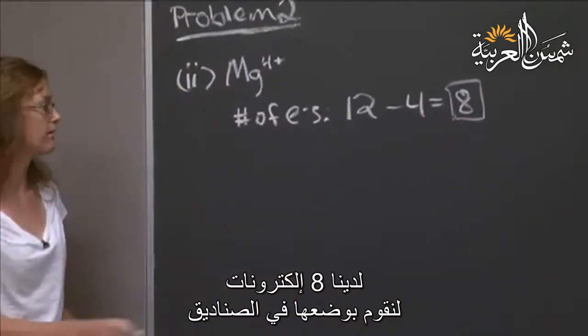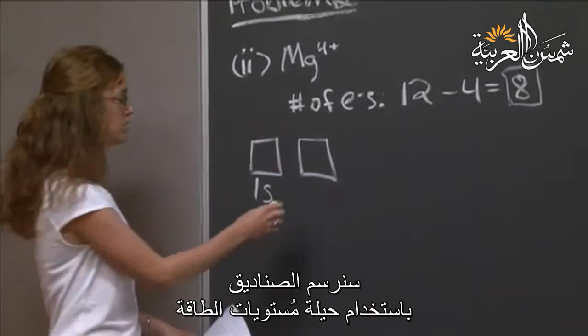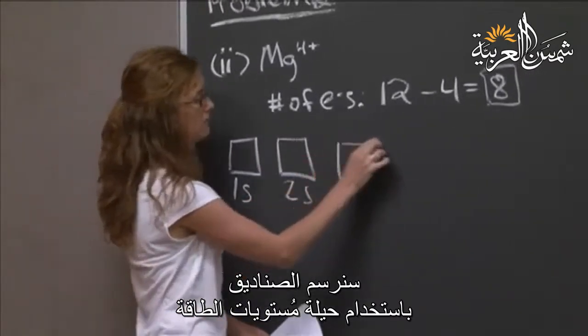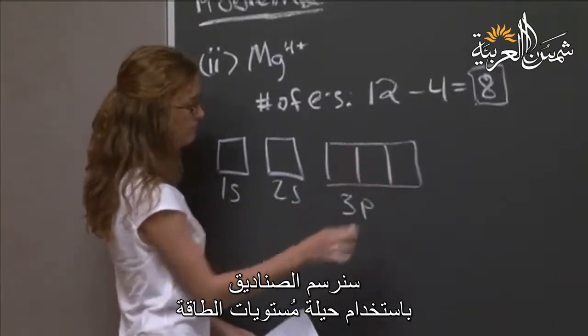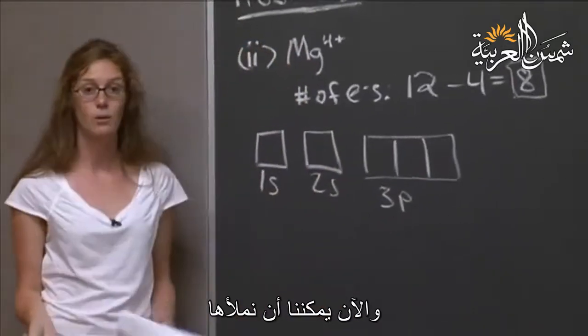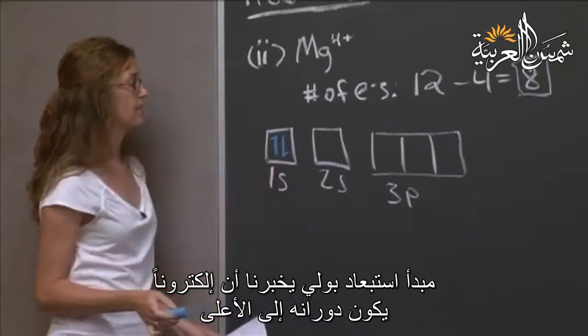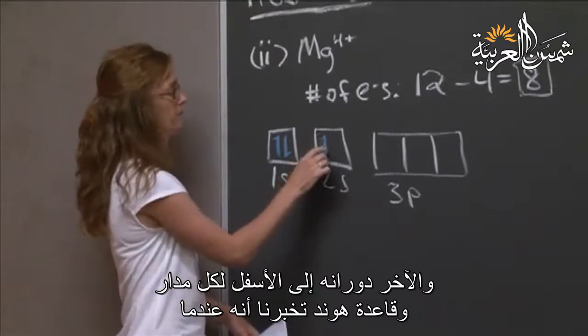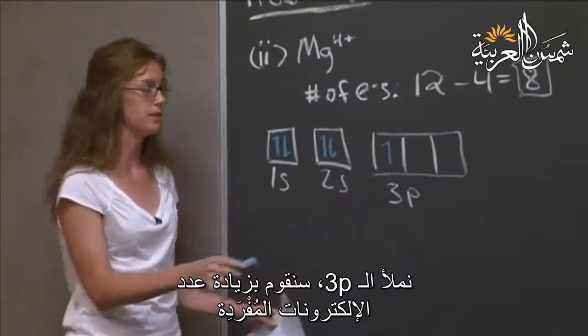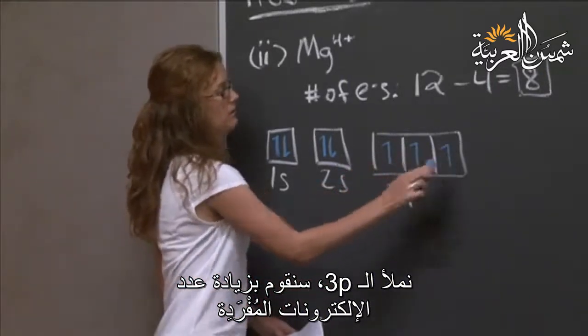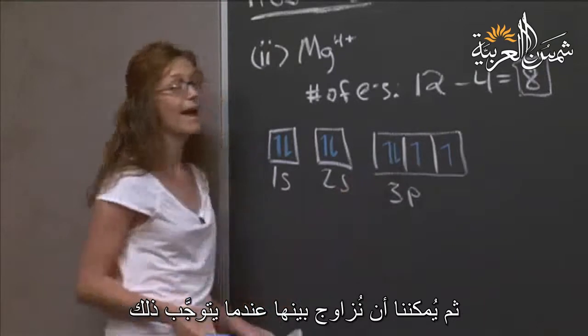But the 4 plus signifies that we have 4 less electrons than neutrality. And so we subtract 4, and we have 8. With 8 electrons to work with, we again want to write down our boxes using the energy level tricks that we have. And now we can fill them up.